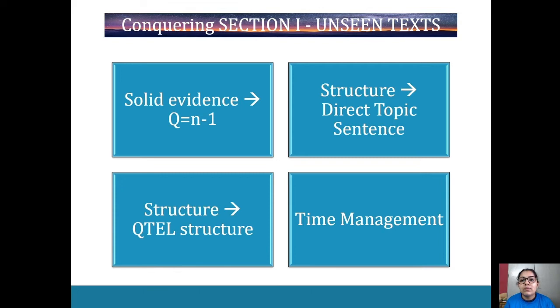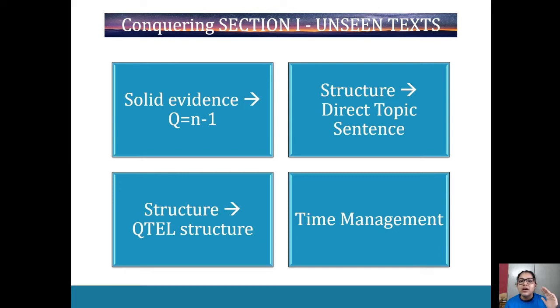Practice to make sure you're giving relevant evidence and enough of it — Q equals N minus one: the number of quotes equals the number of marks minus one. Secondly, structure. The first thing here is the direct topic sentence. You need a direct topic sentence that answers the question straight away. We are not going around in circles — you don't have time for that. For a three-marker you don't want to write two or three sentences as a topic sentence.